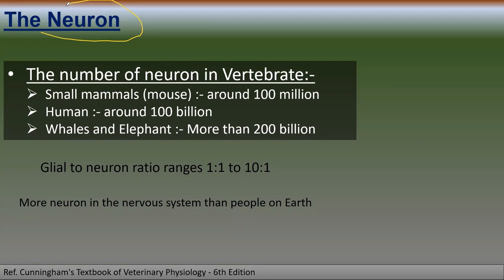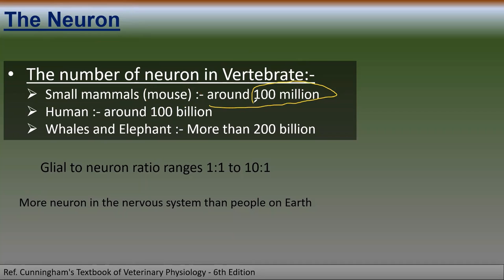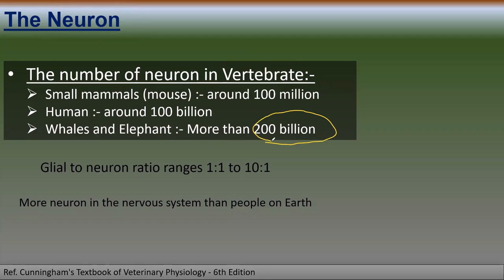The neuron — the number of neurons in vertebrates ranges: in small mammals, for example a mouse, it is around 100 million; in humans it is around 100 billion; in whales and elephants it is more than 200 billion. So the number of neurons in the nervous system is very large.